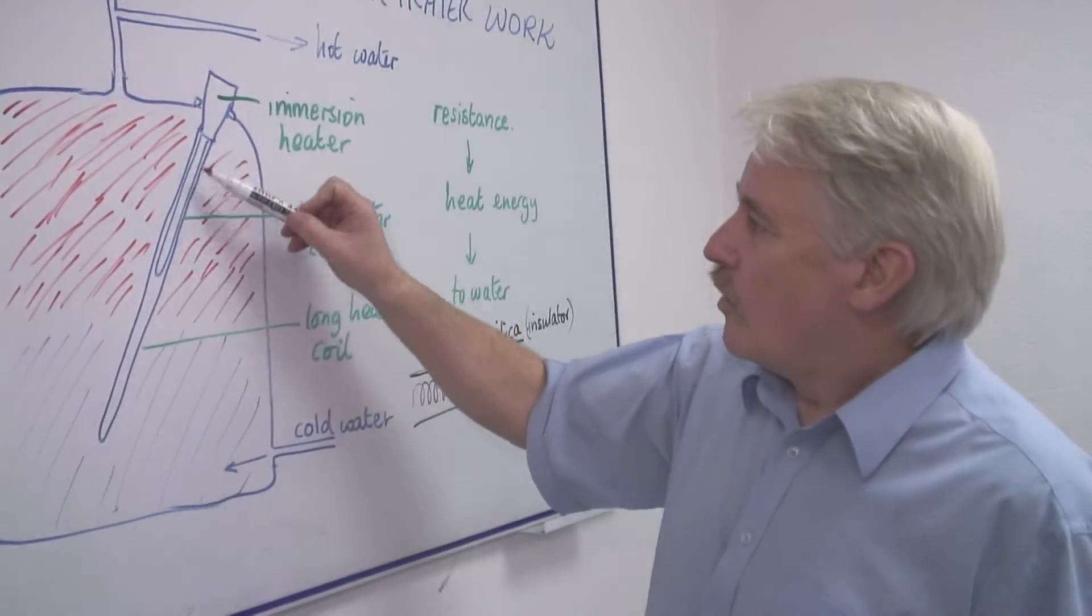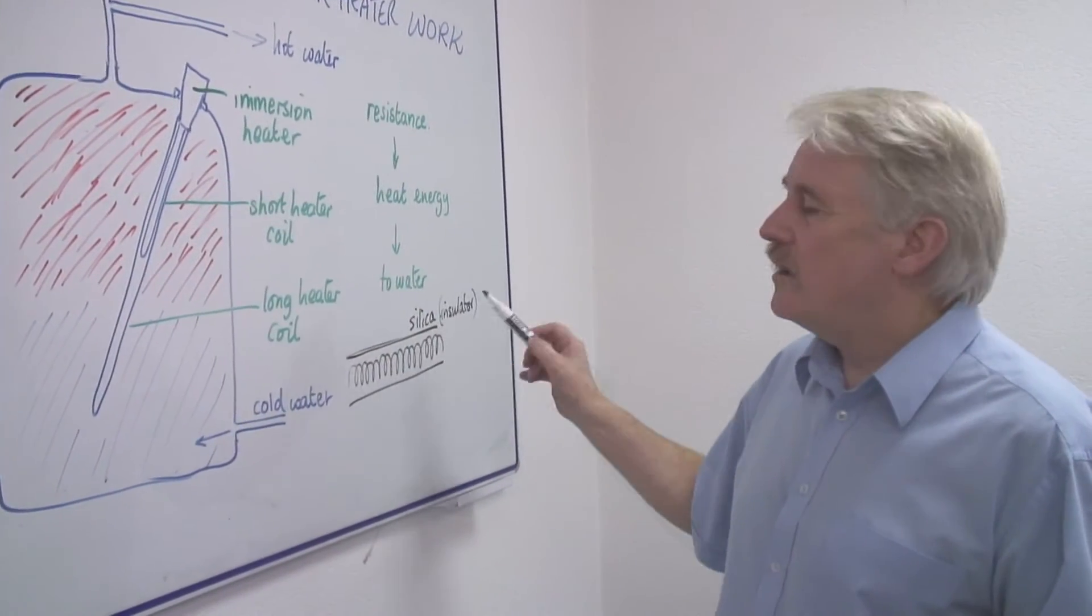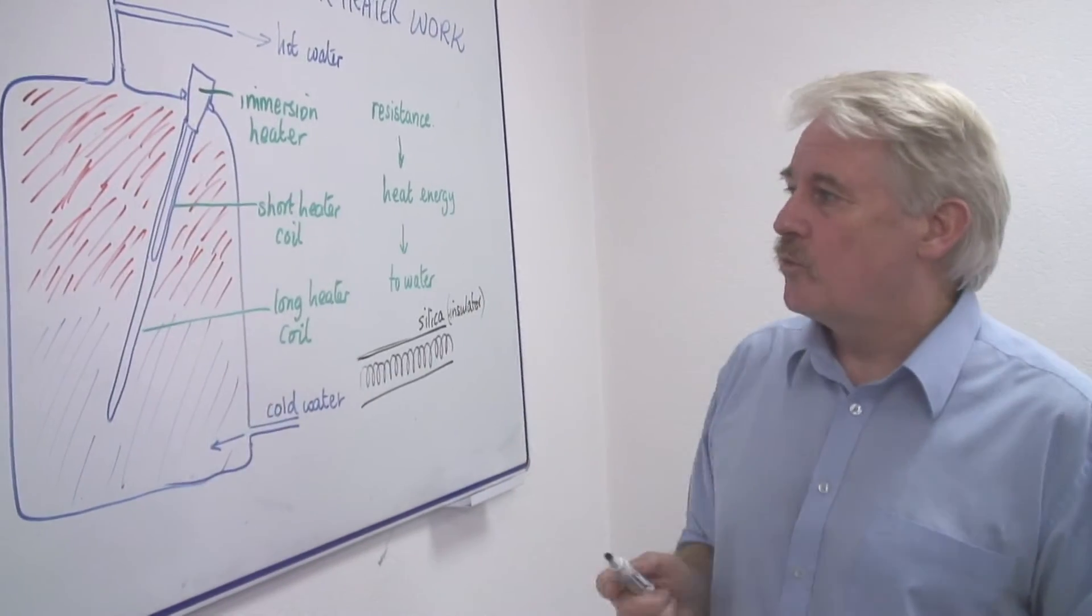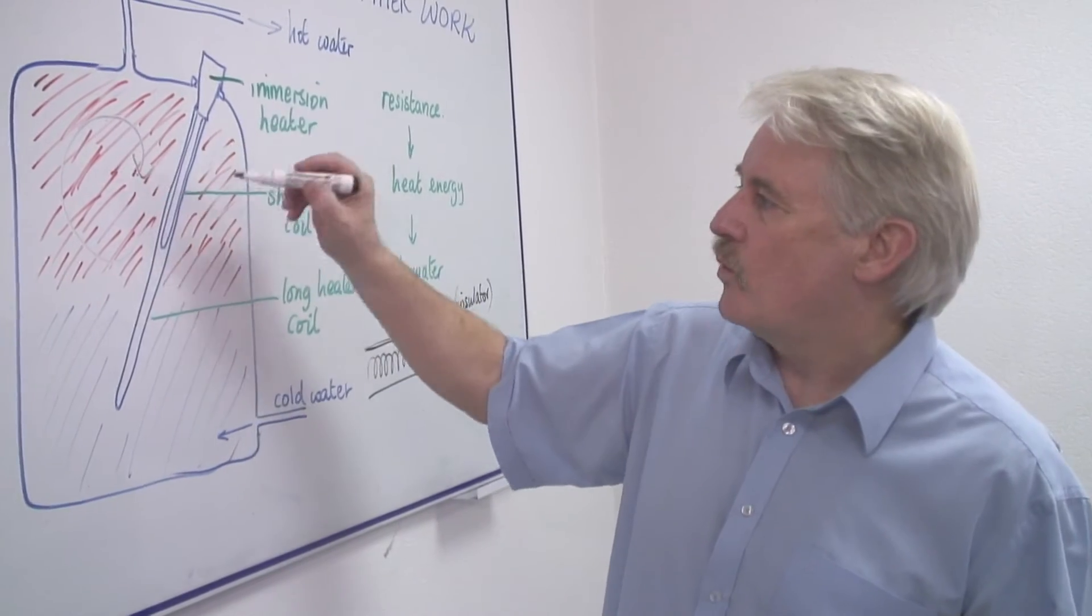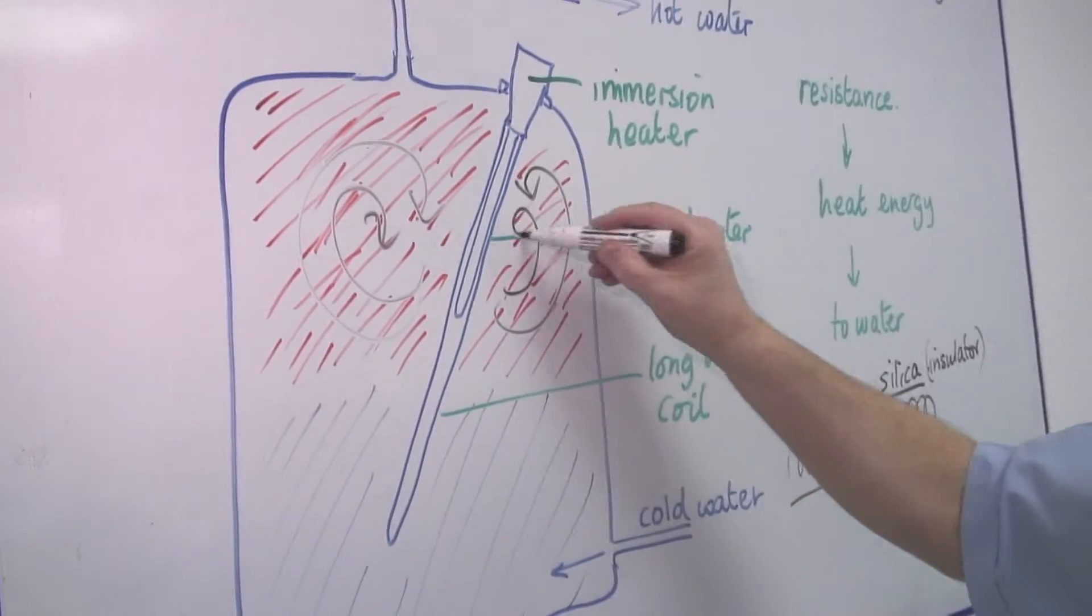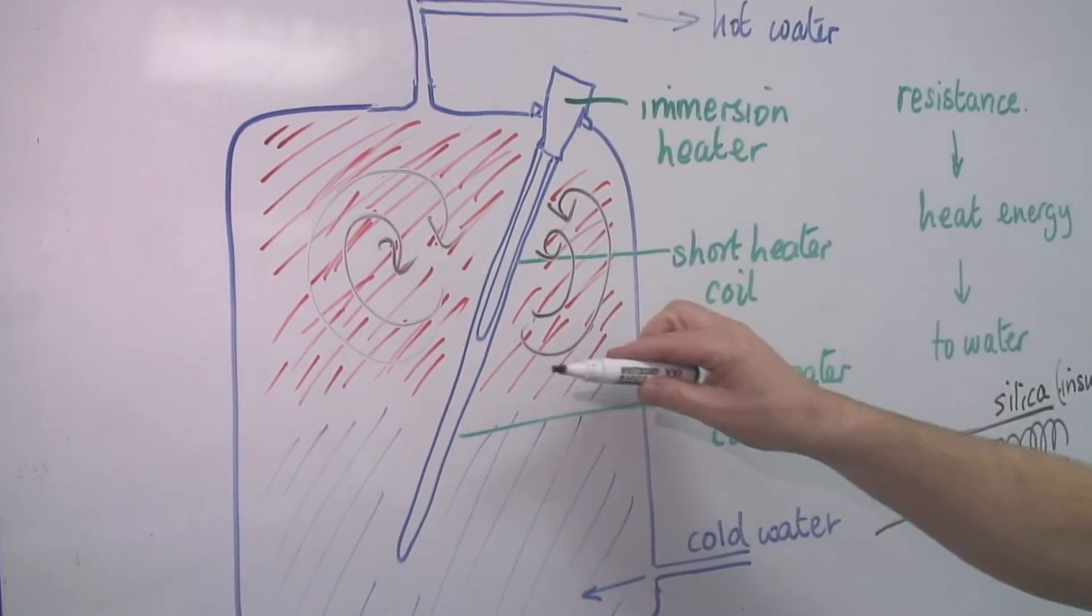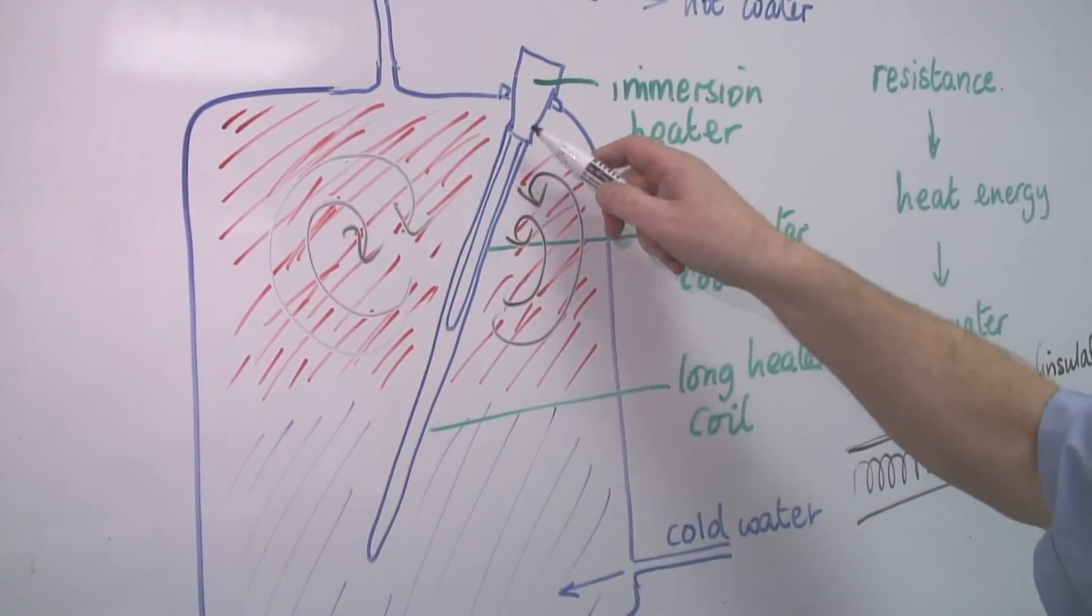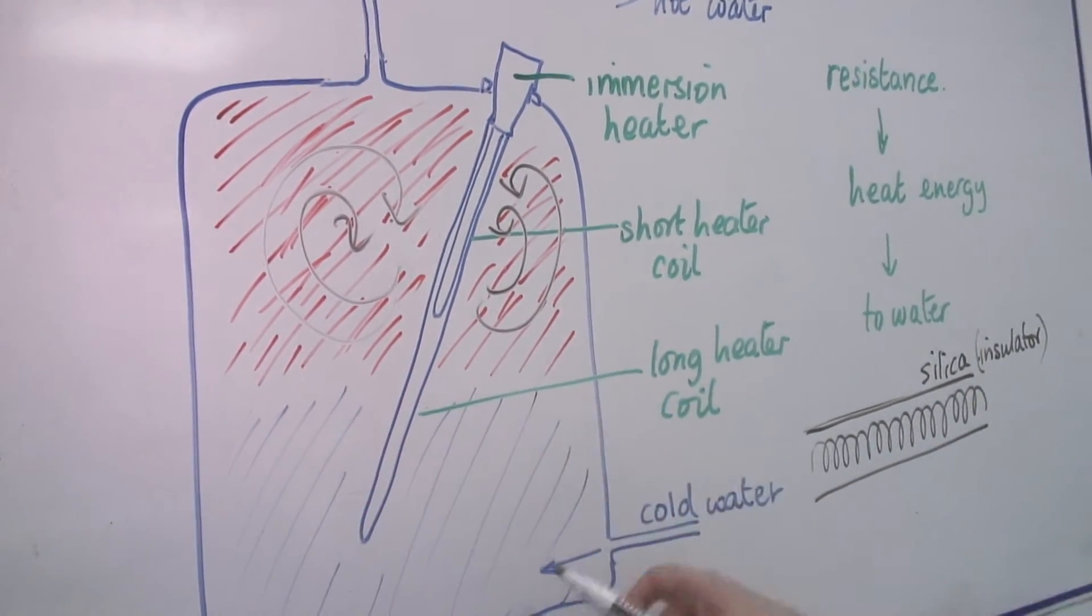So what happens is you pass the electricity through the wire which is in the silica, that gets hot and it will heat up the water. You will get convection currents within the water which makes the water swirl in this kind of way. Because hot water rises, the top will be hot whilst the bottom is cooler. This is why we have a short one and a long one because the long one can heat the bottom.